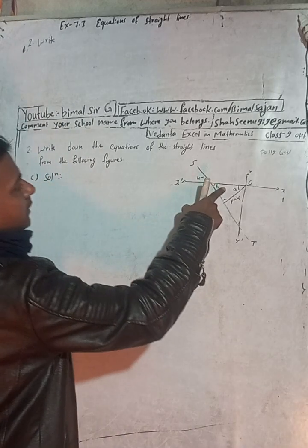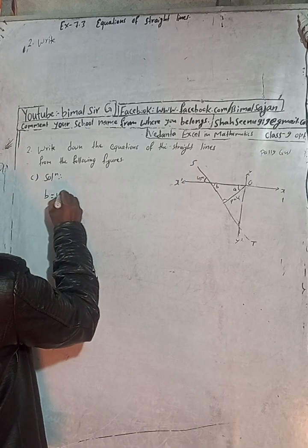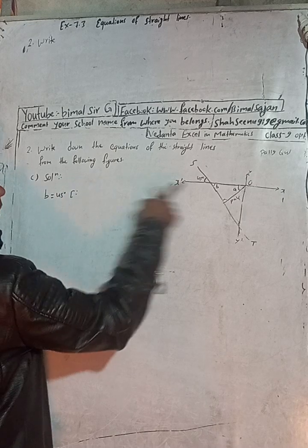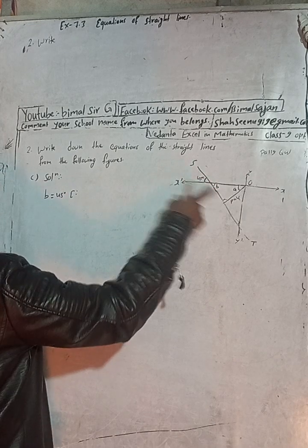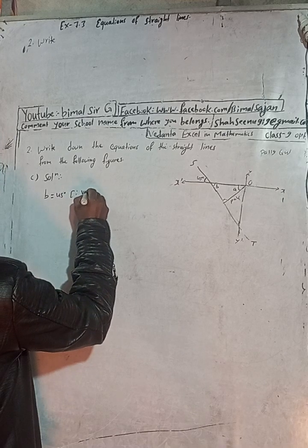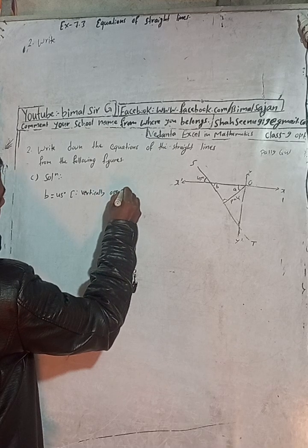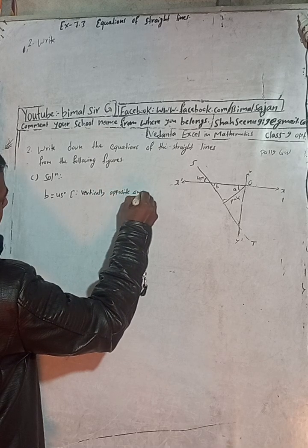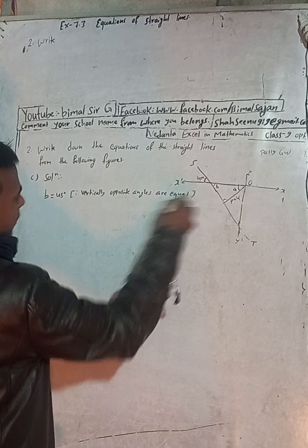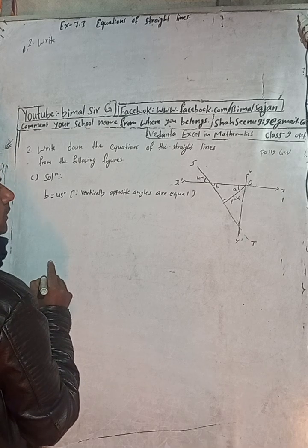Can I find this B value? Here this B is equal to 45 degrees, because this is a vertically opposite angle. Vertically opposite angles are equal, so B is equal to 45 degrees.